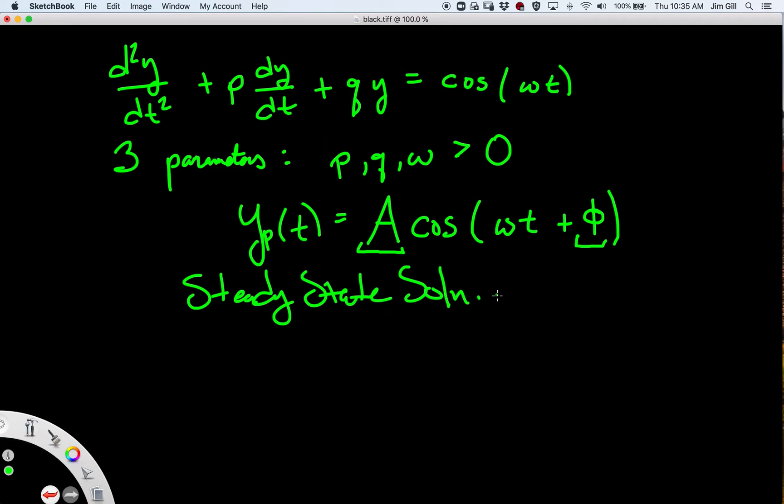What we could do is we could work through the whole problem with general p, q, and omega and figure out what A and phi are. This is done and can be done, and you can find it in most textbooks, but I'm not going to spend the time on that. I'm just going to write down the formulas for these numbers.